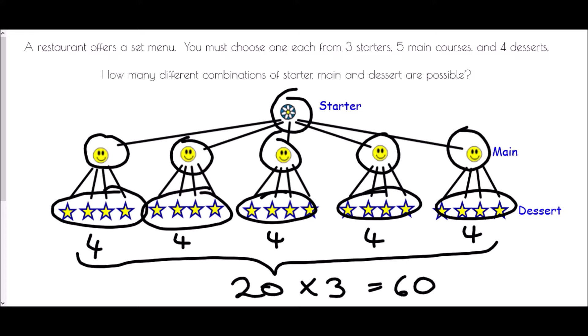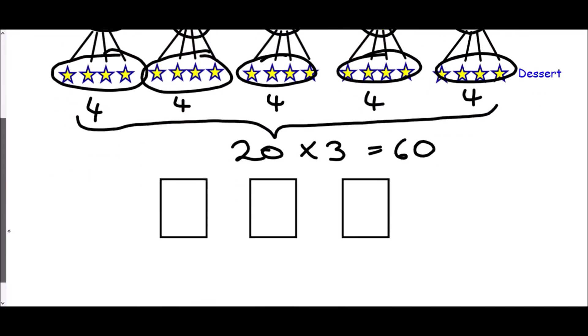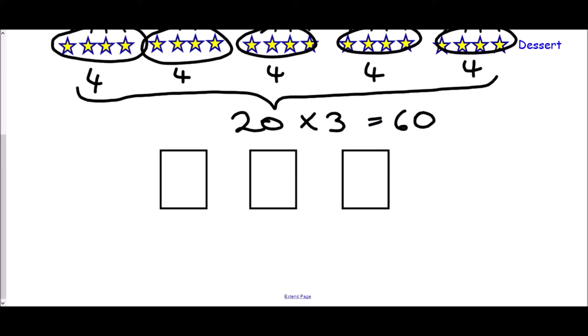But this video is called product rule for counting. Now product means multiply. So there must be a method where we could go straight to this answer of sixty. And to do that we're just going to think about filling boxes. We've got our starter, our main and our dessert. How many options did we have for starter? We had three. For main course we had five. And for dessert we had four. Product means times. Let's multiply. Three times five times four equals sixty.